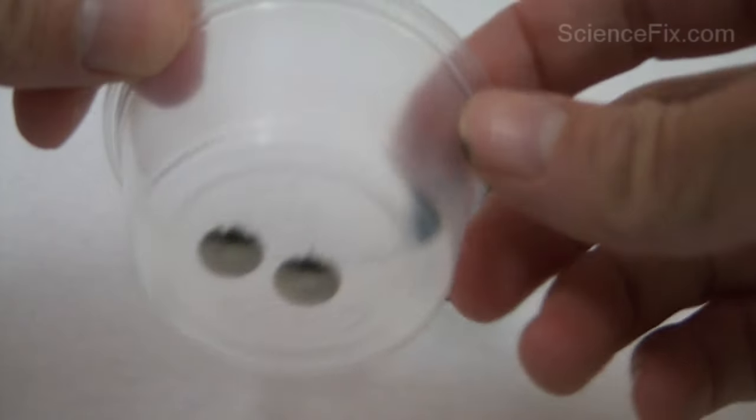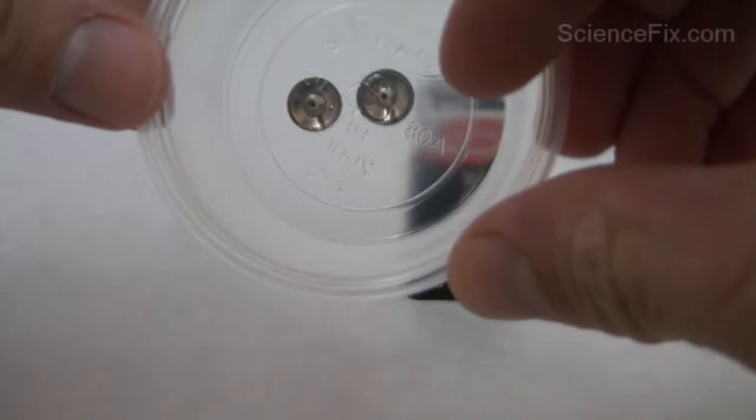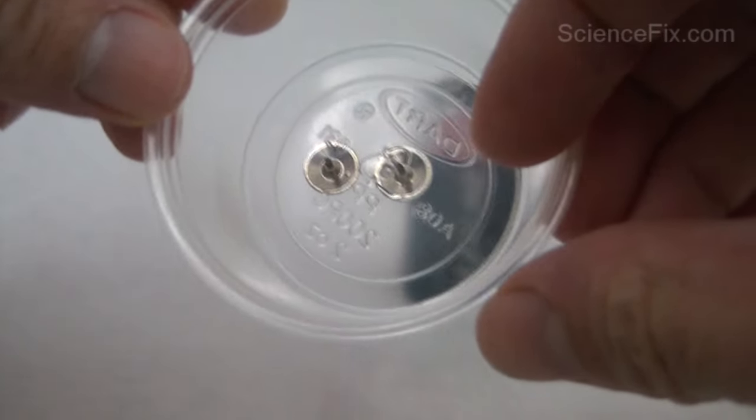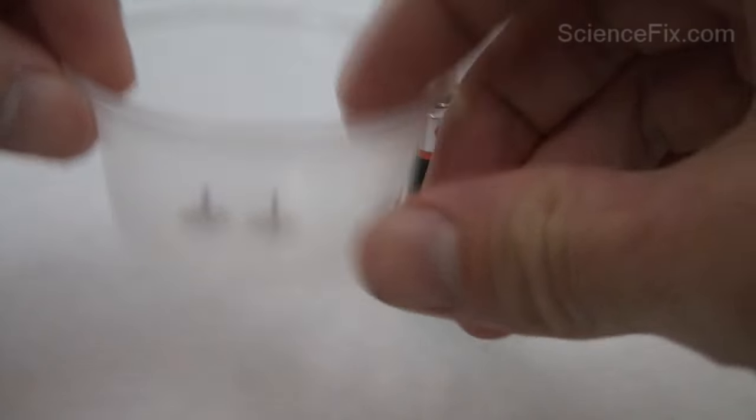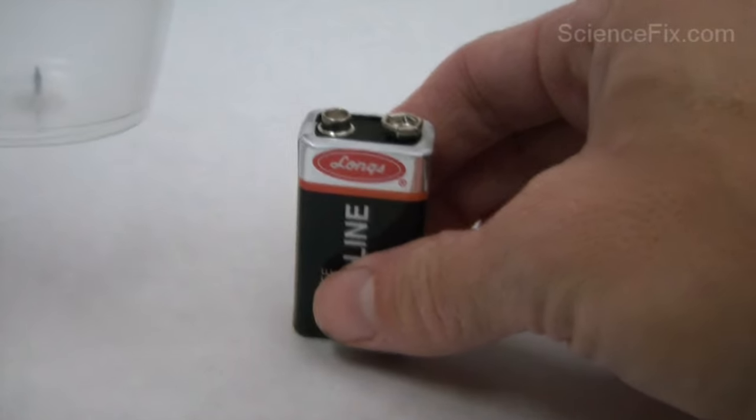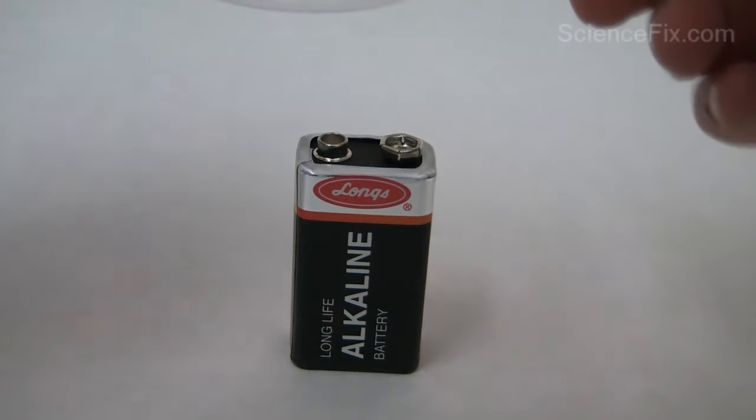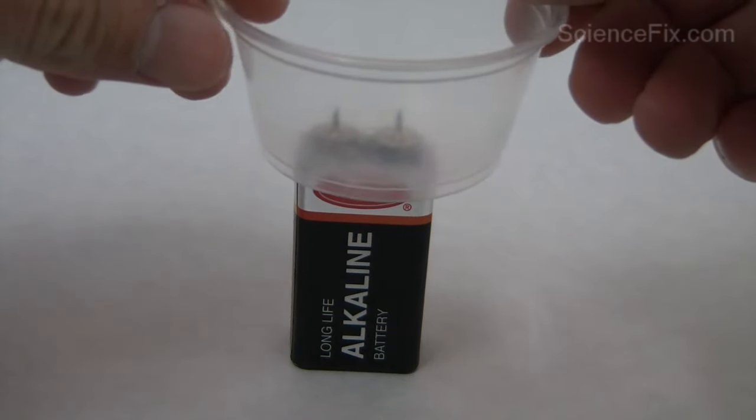In that small plastic container are two metal push pins, inserted at a distance between the positive and negative lead of the 9-volt battery. Just insert them in there and make sure they're that distance apart and that should be fine.